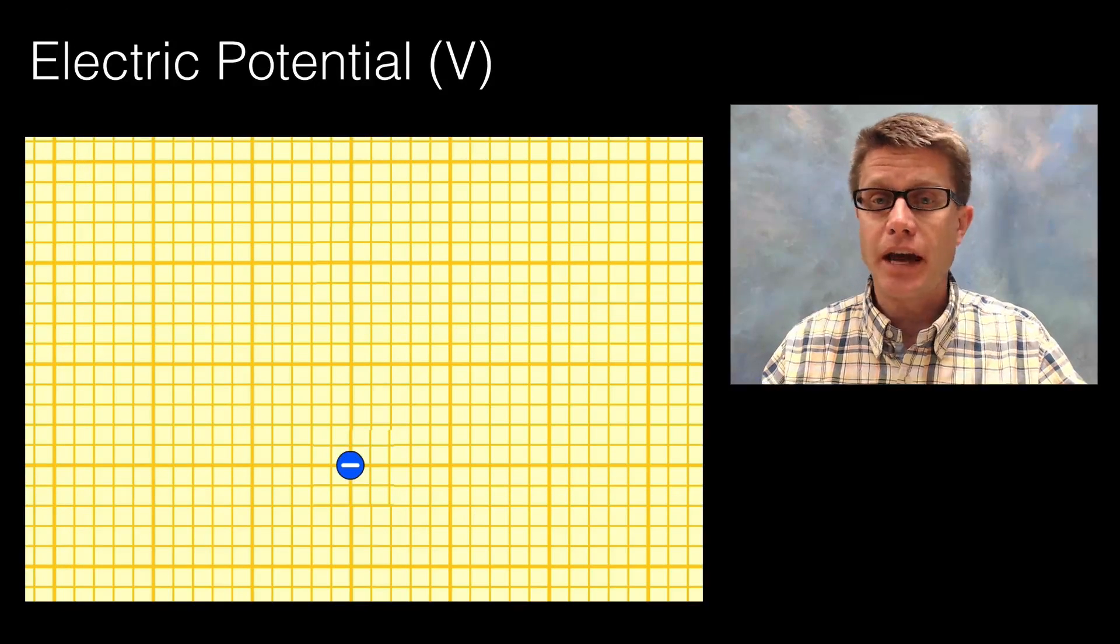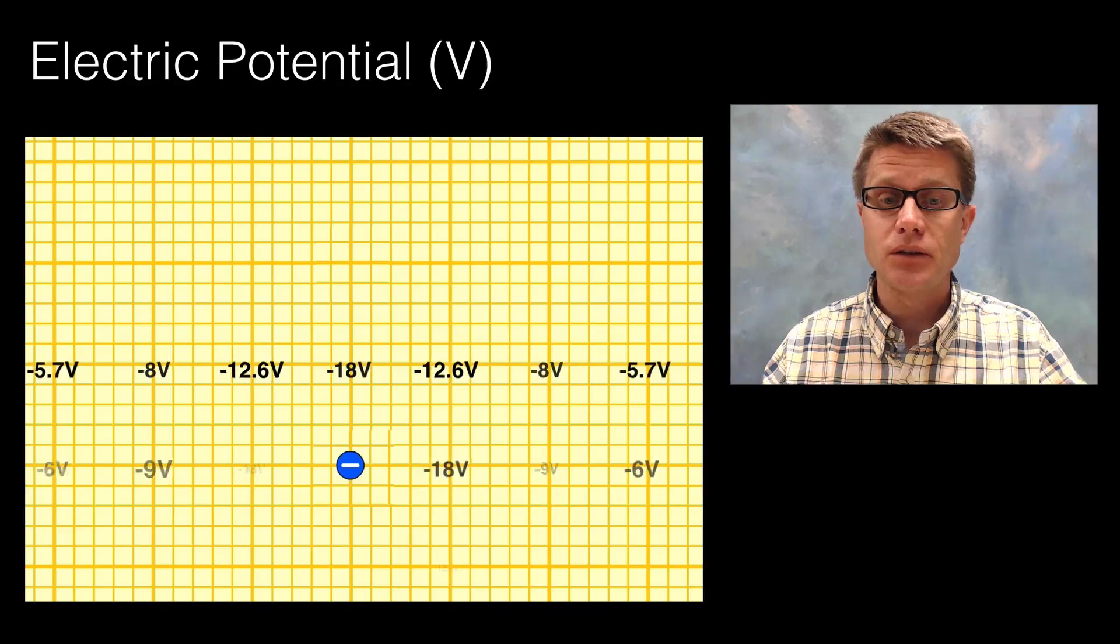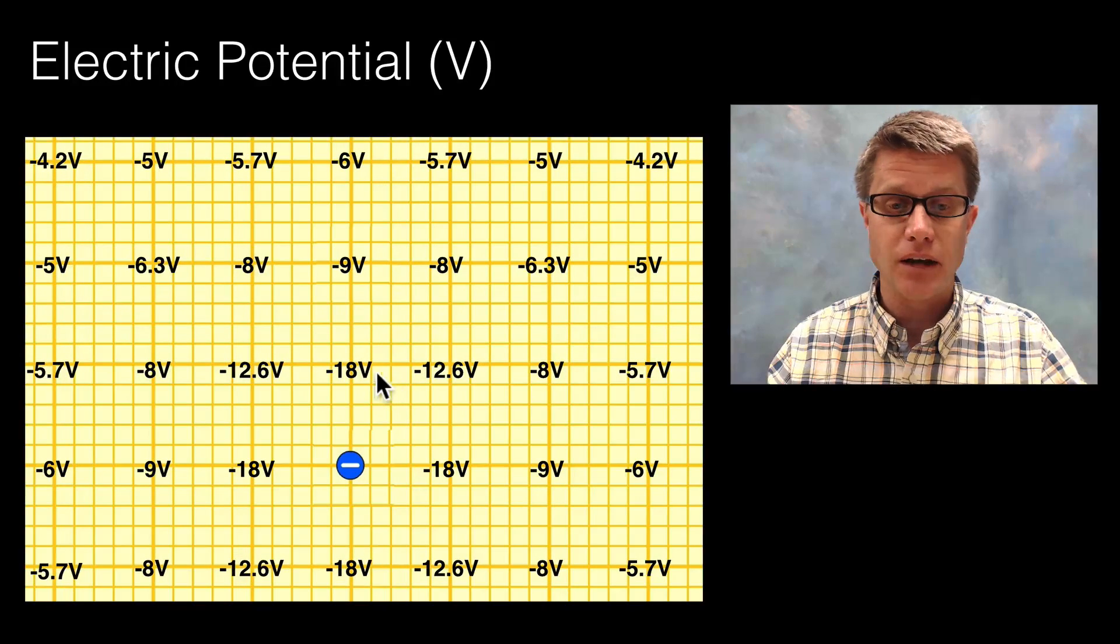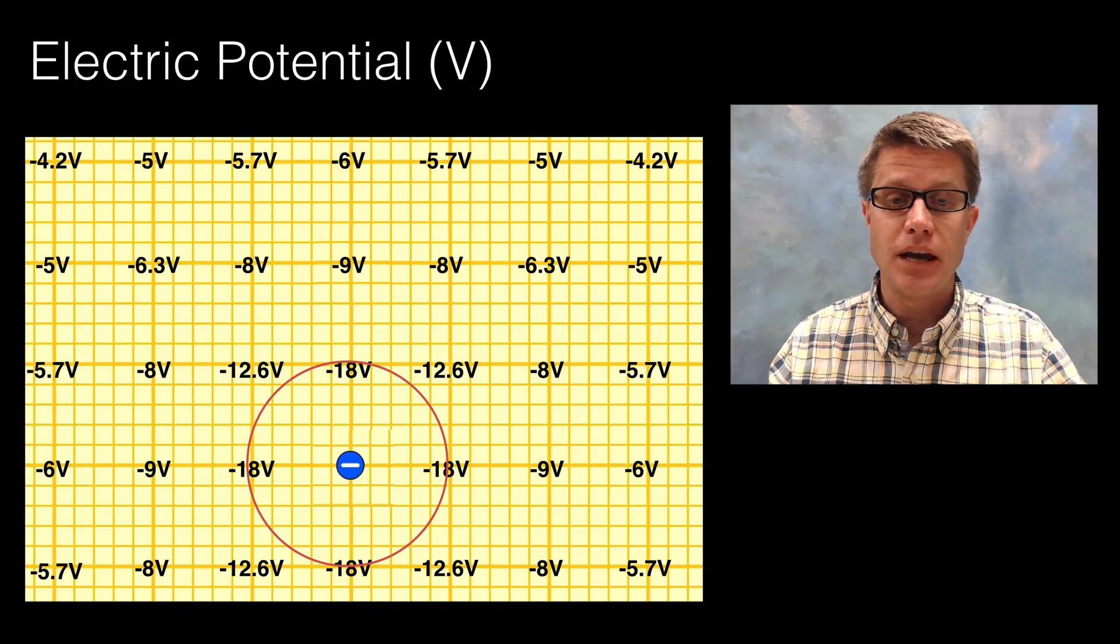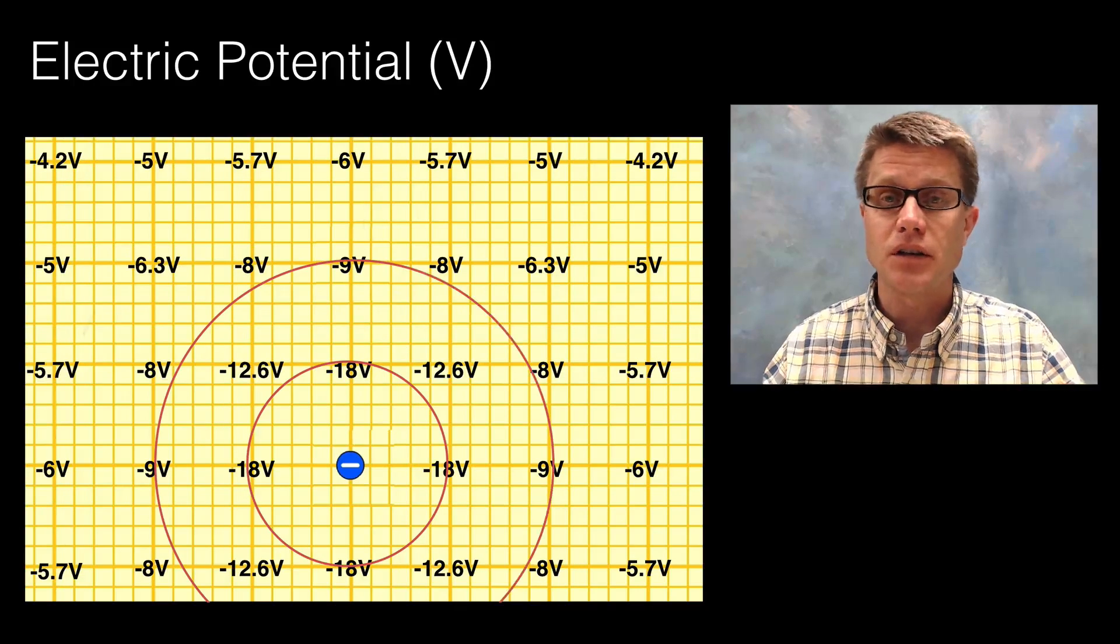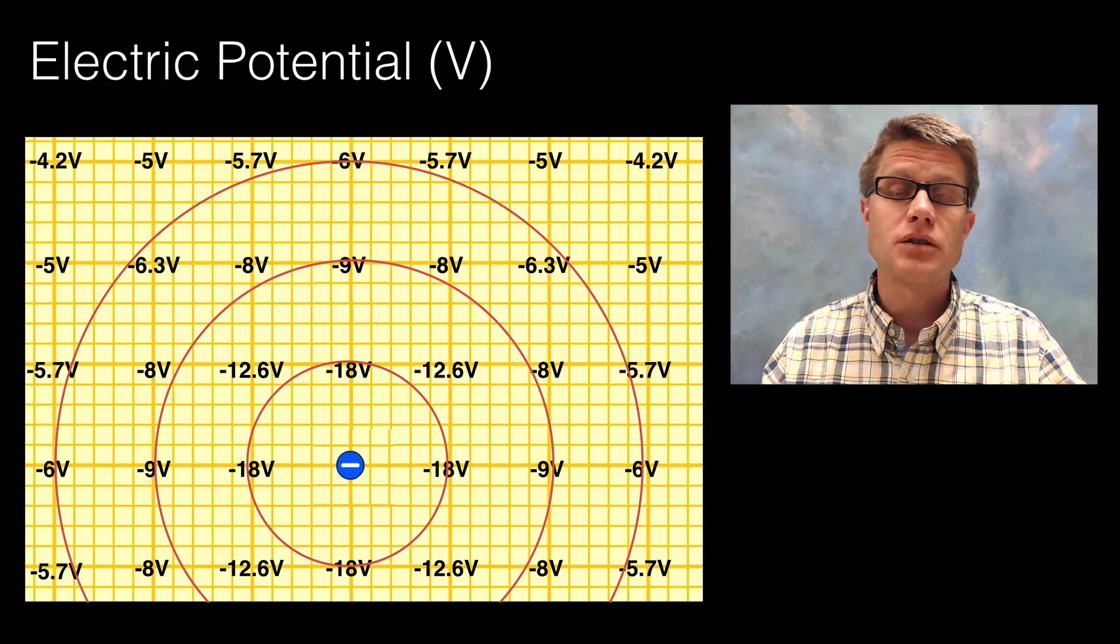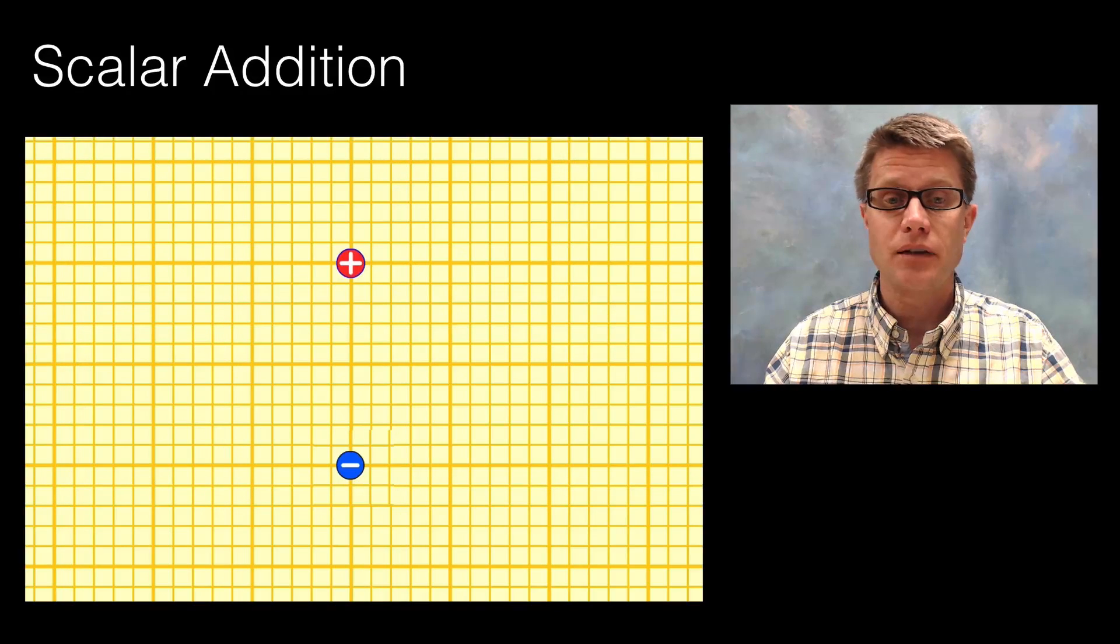Let's say we were to look at a negative charge. And we were to plot all the scalar quantities we would get a scalar field. You can see here that they're all negative values. Negative 18 here. Negative 9 around that. Negative 6 around that. And so that makes sense. The farther we move away from the charge the less voltage we have or the less potential we have.